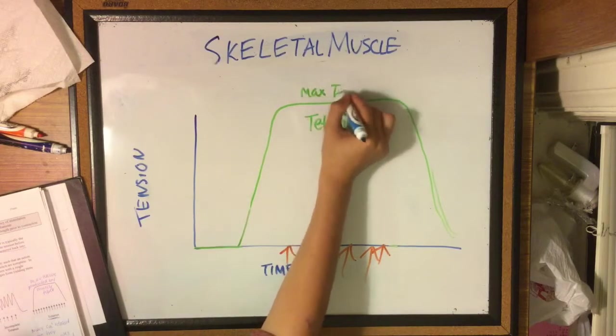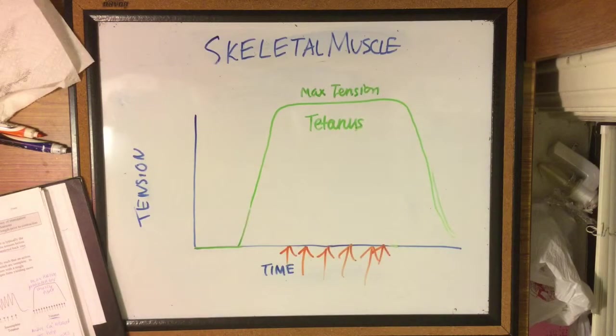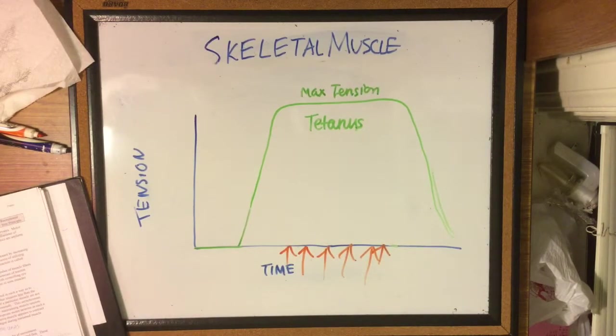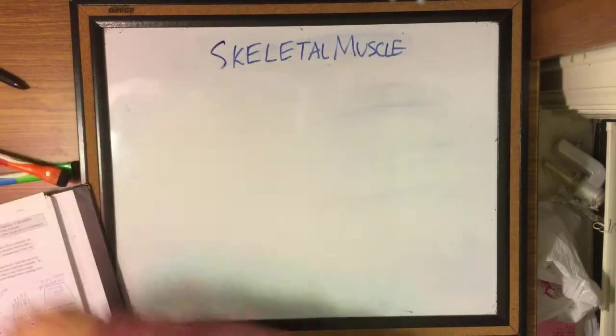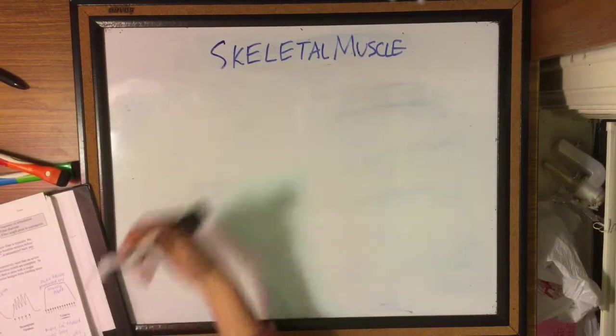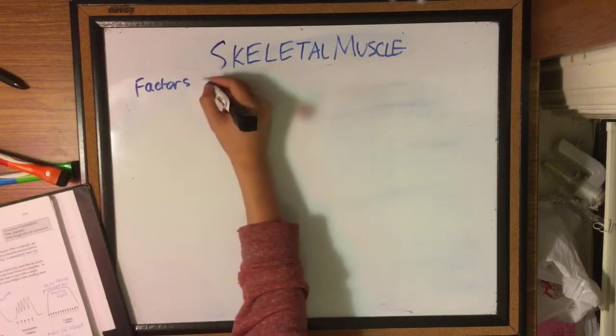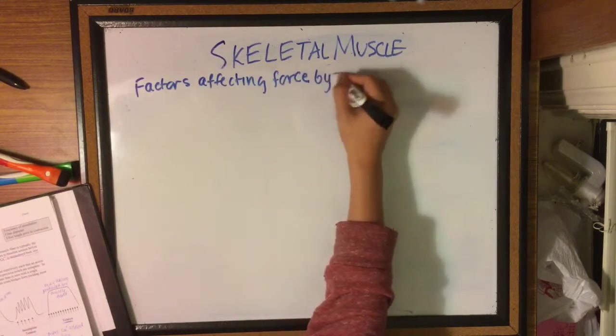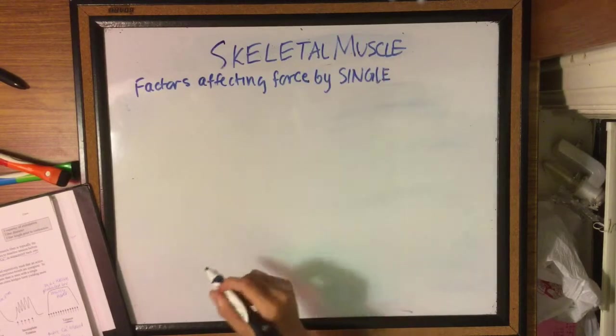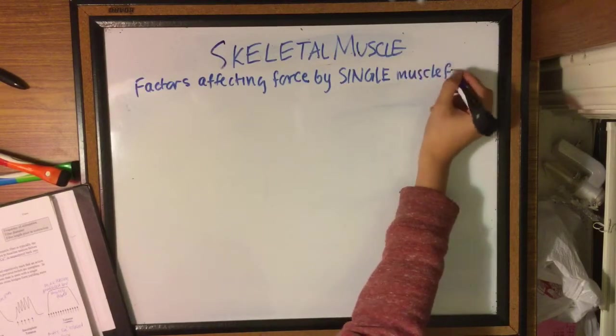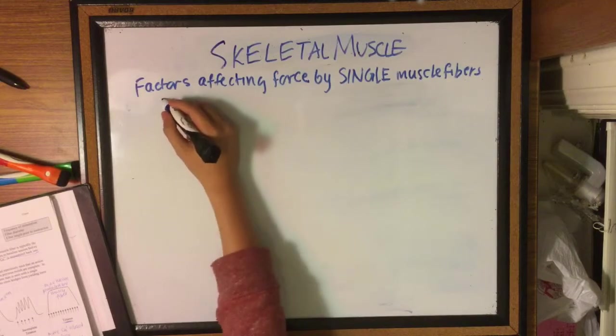In addition to the frequency of stimulation, the fiber diameter also affects the force generated by a single muscle fiber. The more you exercise and the more swole you are, the greater the cross-sectional area, which means a greater amount of contractile proteins, which means more cross bridge formation and more tension can be generated.